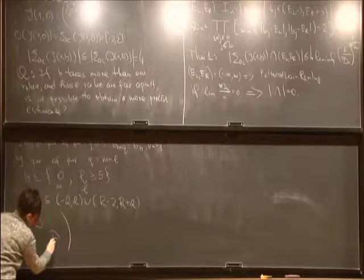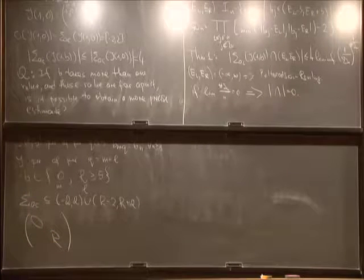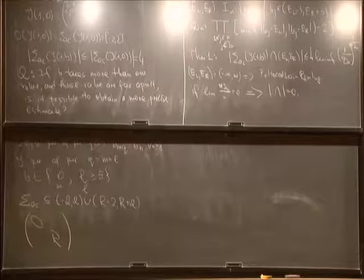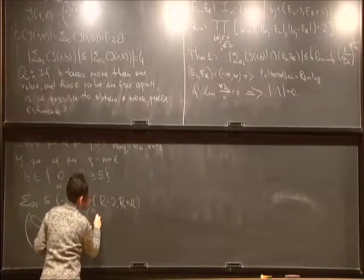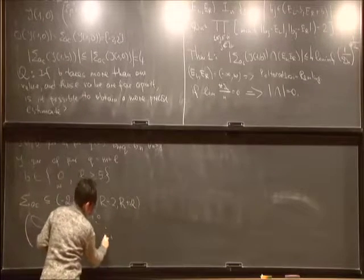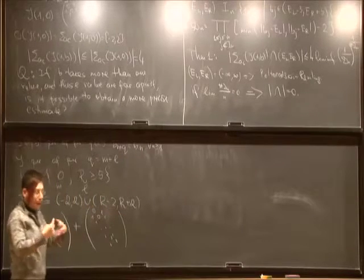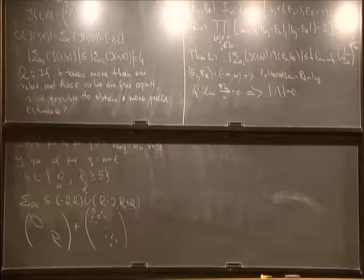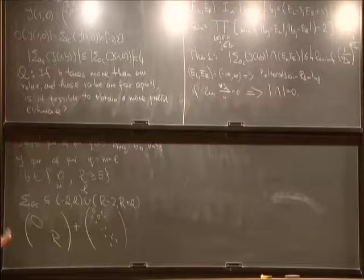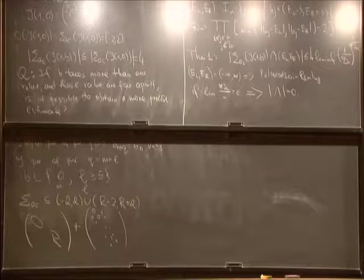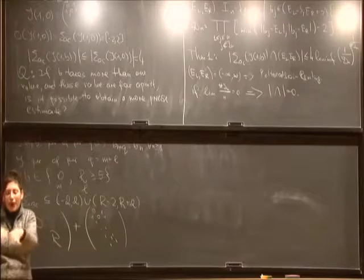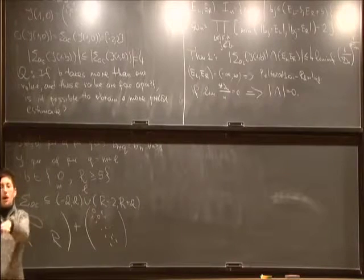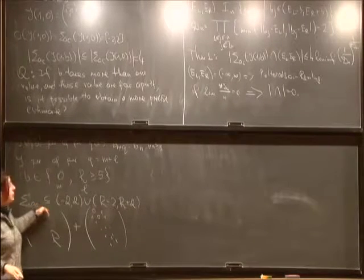First, the AC spectrum of this operator is contained in the union of the intervals [−2, 2] ∪ [r−2, r+2]. The easiest way to see this: consider a diagonal operator with zeros and r on its diagonal, which has exactly two eigenvalues, 0 and r. Perturbing by the free Laplacian, the spectrum can move at most by the norm of the perturbation, which is 2 for the free Laplacian, so eigenvalues spread at most 2 around 0 and r.